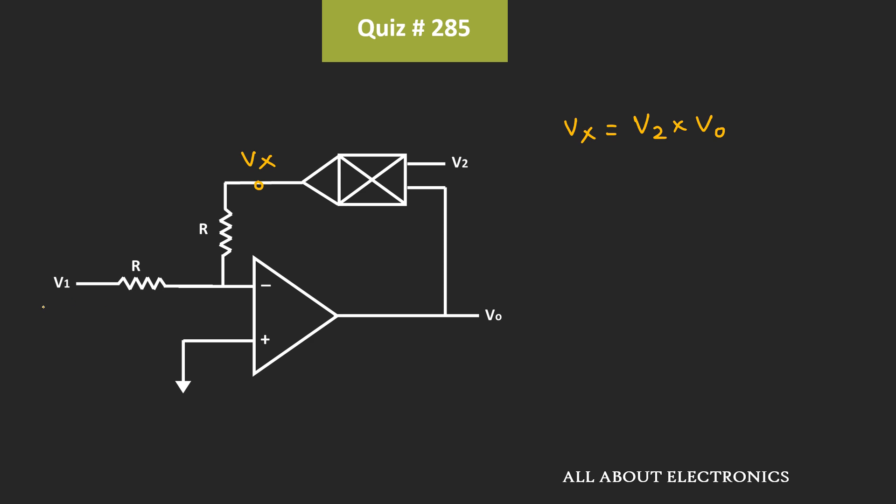Now, we have been given that V1 is equal to 15V, while V2 is equal to 3V. That means Vx is equal to 3V0.